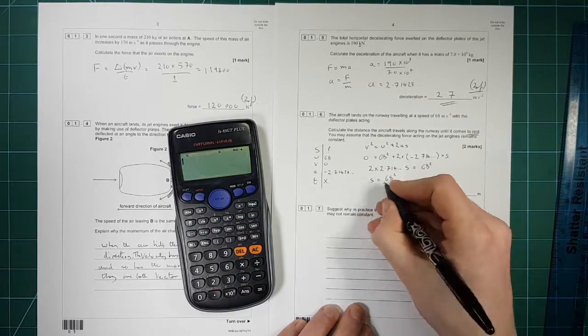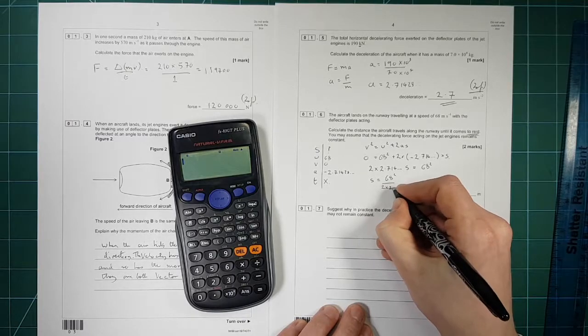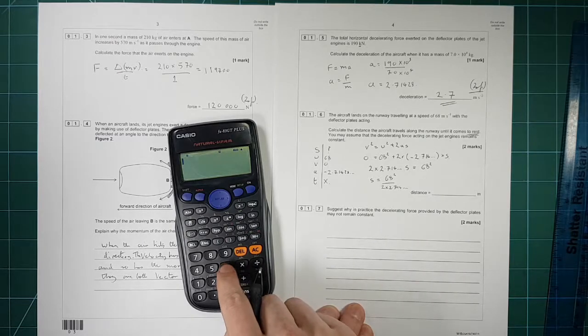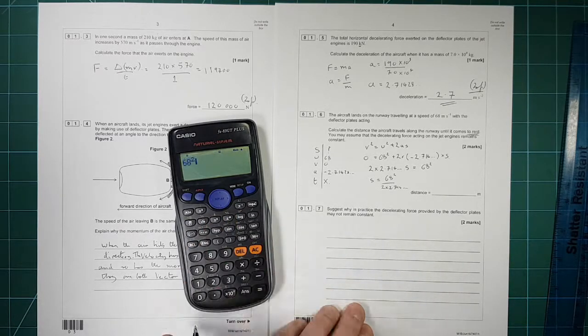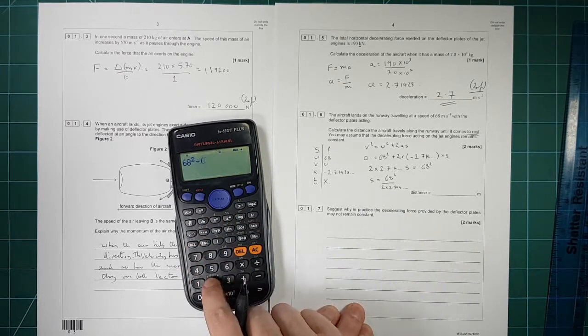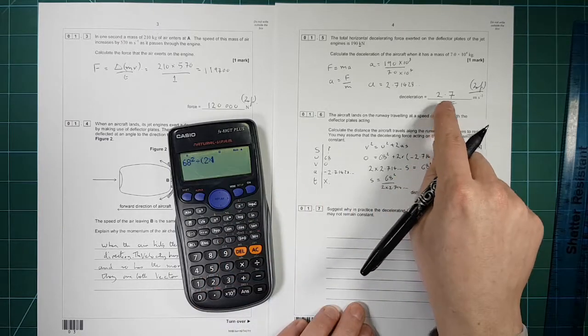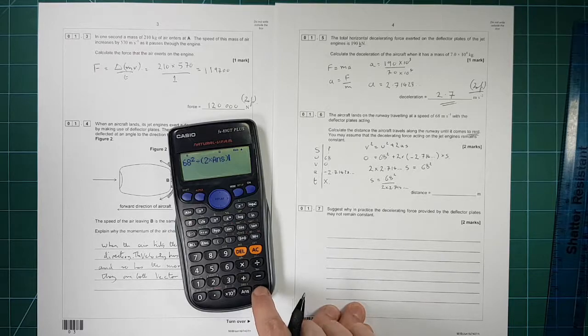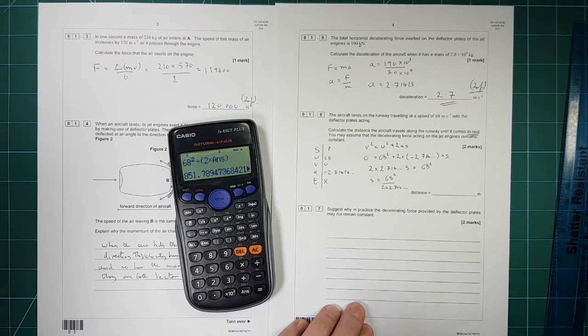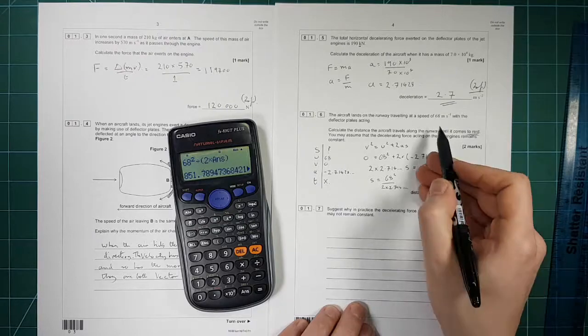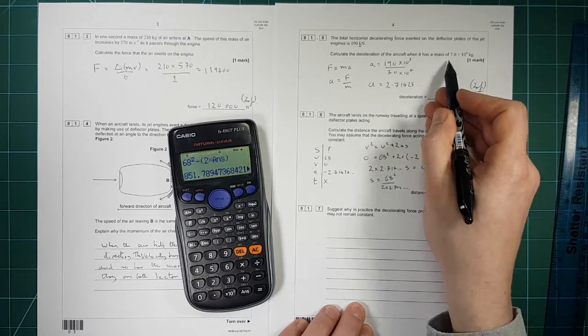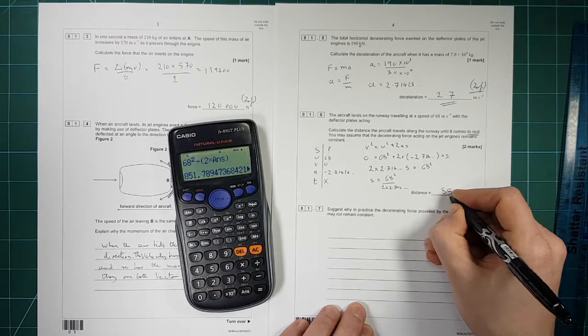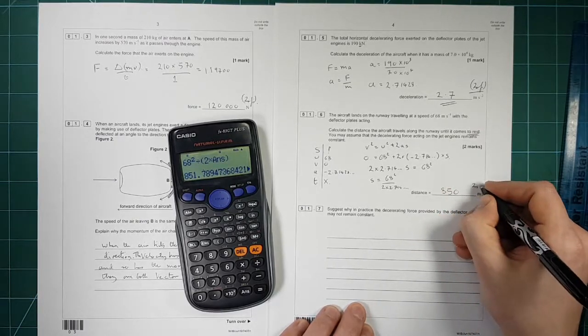So we need 68 squared. And then I want to divide that by 2 times by. And the last thing I worked out, which is still stored in my calculator, is the answer. So I get that. And let's think about sig figs. That's 2 sig figs. That's 2, 2, 2. So we want 2 sig figs. So that's 850 meters to 2 sf.